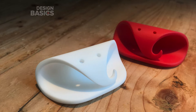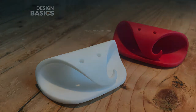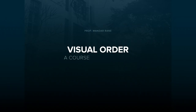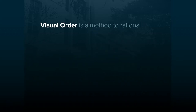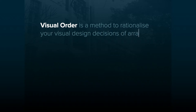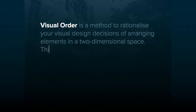Welcome to Design Basics: Understanding Visual Order, a foundation course in basic design. Visual order is a method to rationalize your visual design decisions of arranging elements in a two-dimensional space.